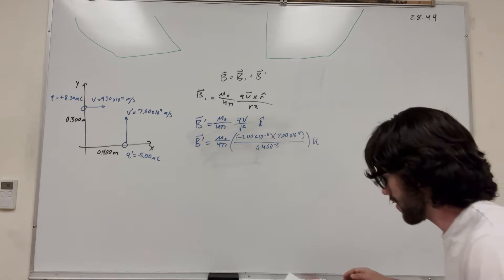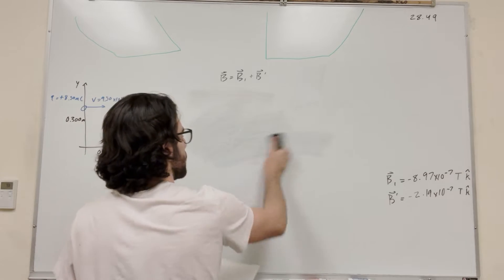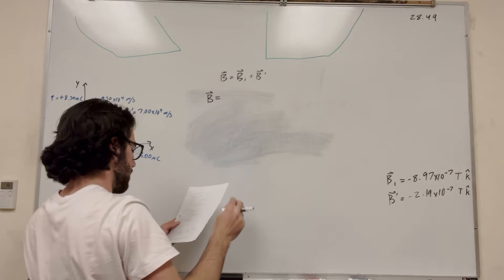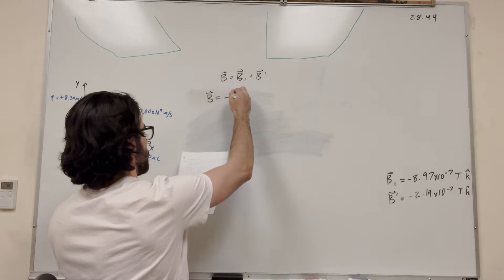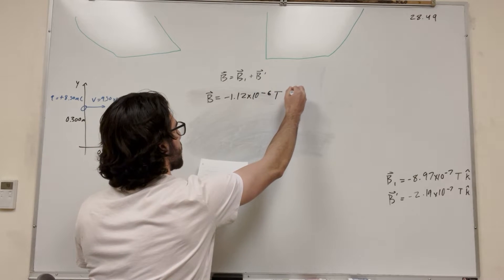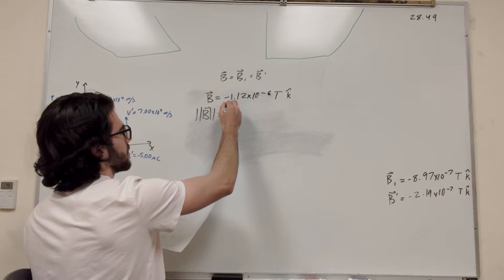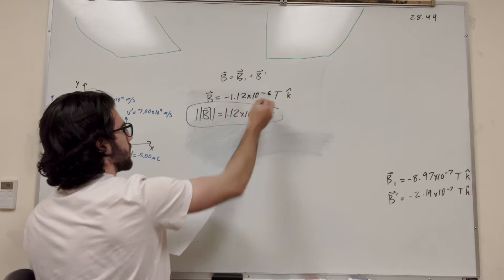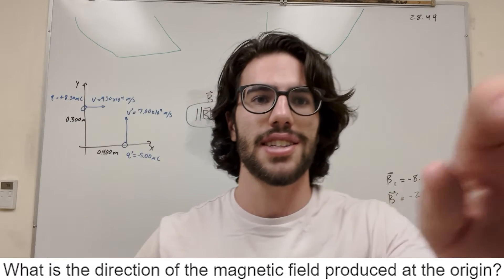Let's plug all the numbers in for B prime. U-naught over 4-pi, Q is negative 5 times 10 to the negative 6, velocity is 7 times 10 to the 4th, sine term is 1, over R squared which is 0.4 squared. If you do the math, you'll get B prime equal to negative 2.19 times 10 to the negative 7 K̂. Both magnetic fields due to these charges are pointing inward. Now all we have to do is add them together, so B total equals B1 plus B prime, which gives B equal to negative 1.12 times 10 to the negative 6 Tesla. And if you're finding the magnitude of B, due to the absolute value, it's just the positive version: 1.12 times 10 to the negative 6 Tesla. That's the answer to Part A.